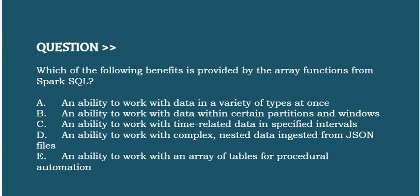Option A: An ability to work with data in a variety of types at once. Option B: An ability to work with data within certain partitions and windows. Option C: An ability to work with time-related data in specified intervals. Option D: An ability to work with complex nested data ingested from JSON files. Option E: An ability to work with an array of tables for procedural automation.